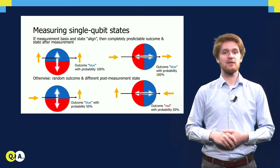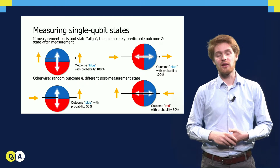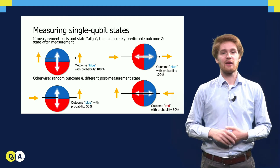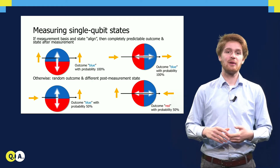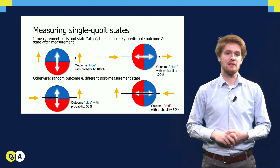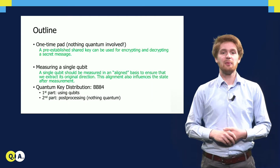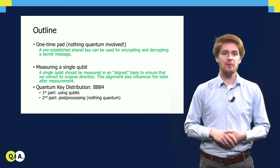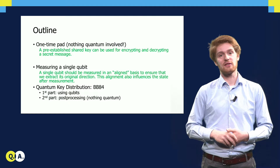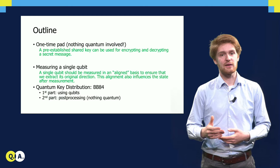Analogously, measuring a vertical state in a horizontal basis also yields a completely random outcome, as can be seen in the lower right corner. Using similar reasoning, one can find out if the outcome and post-measurement state are completely predictable or random for all eight possible combinations of states and measurement bases. Measuring a single qubit state can be summarized as follows: a single qubit should be measured in an aligned basis to ensure that we extract its original direction, and this alignment also influences the state after the measurement.